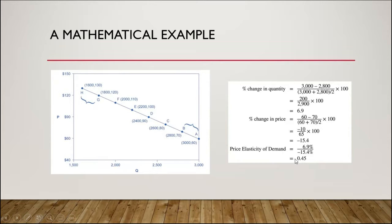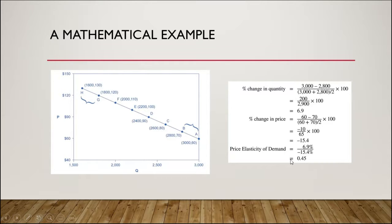You'll notice there should be a negative sign in front of this, but we tend to use things in absolute terms. Technically there should be a negative value here to show that the demand curve is downward sloping. This epsilon of 0.45 tells us that the price elasticity of demand at this point on the demand curve, between point B and point A, is relatively inelastic — it's less than one. There's a relatively small change in quantity, 6.9 percent, compared to a relatively large change in price, minus 15.4 percent.